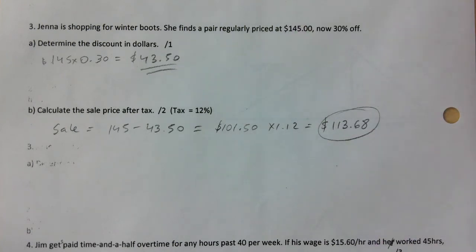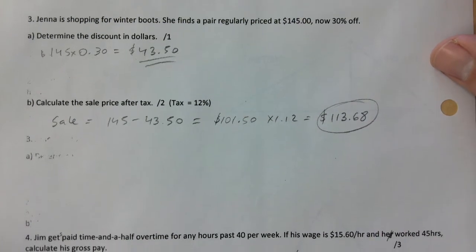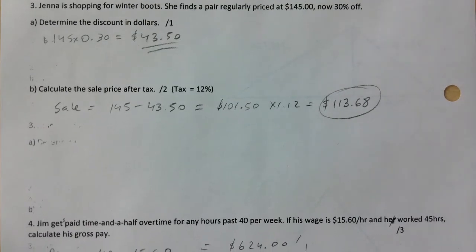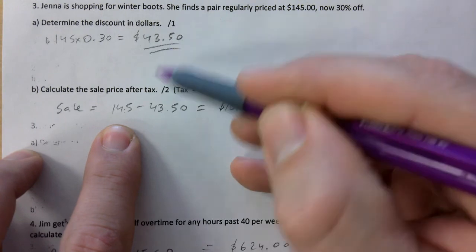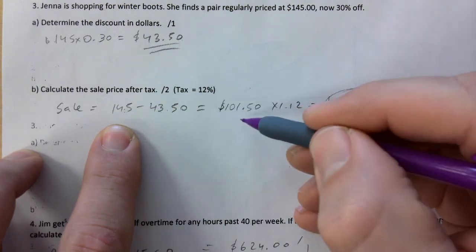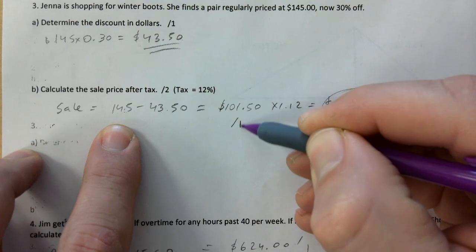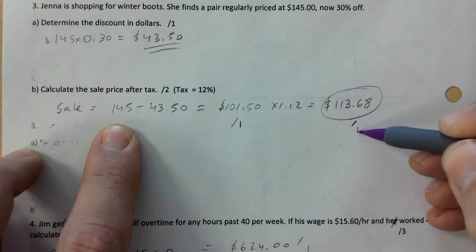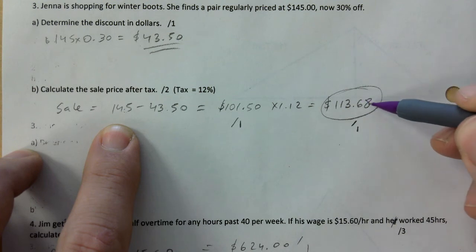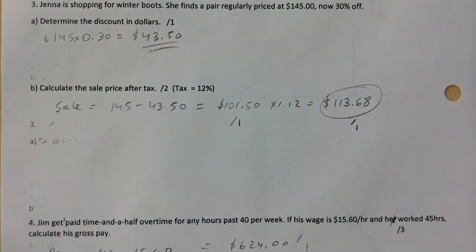Calculate the sale price after tax. So if you subtract the discount from the original and you get $101.50, you get one mark already. And then you get one more mark for figuring out the taxes, like for calculating the taxes.